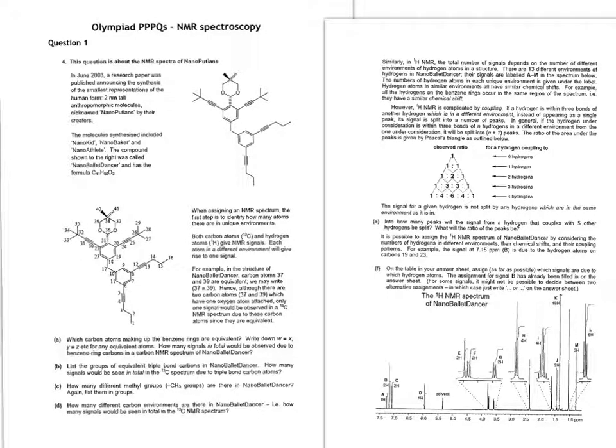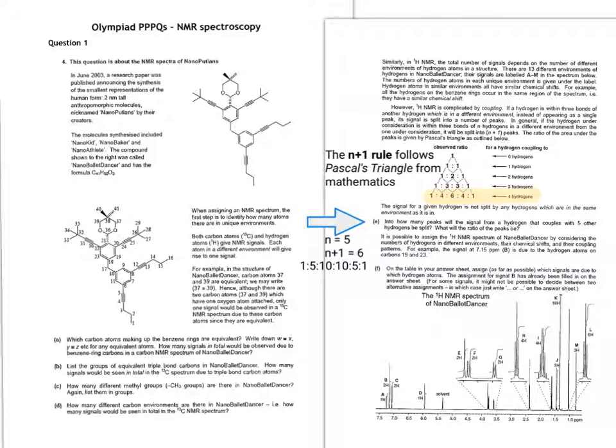In these final two parts of the question, it's switching over from carbon NMR to hydrogen NMR. The N plus 1 rule actually follows Pascal's triangle. It asks how many peaks will the signal from a hydrogen that couples with five other hydrogens be split into, and what ratio will the peaks be. If N equals five, N plus one equals six. If you take the pattern from four hydrogens, you can see that five hydrogens would have the ratio one to five to ten to ten to five to one.